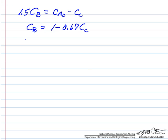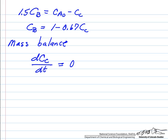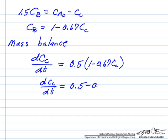So we go back to the mass balance again. The change in the concentration of C with respect to time is equal to the rate constant, which is 0.5 times the concentration of B, which is 1 minus 0.67 the concentration of C. So we have an equation that we can separate variables now and integrate.